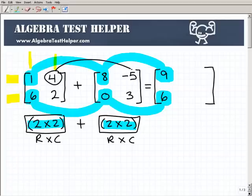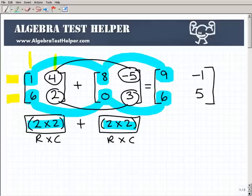Now we have 4 plus this negative 5, so we have to be careful when dealing with these positive and negative numbers. That'll be negative 1. And then 2 plus 3, and that'll be 5. And there is our answer. I'm going to write it right here: 9, negative 1, 6, 5 would be the sum of those two matrices.